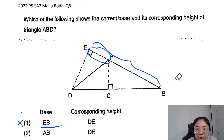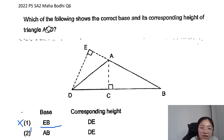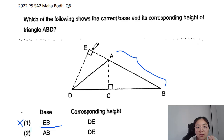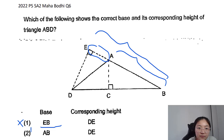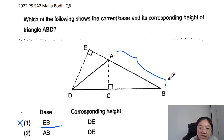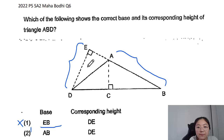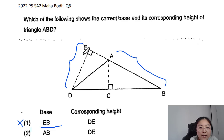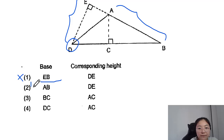Option two says AB is the base — yes, AB is part of the triangle, unlike EB which included the dotted extension EA. So with AB as the base, we look at DE as the corresponding height. Remember, when we have this type of triangle we extend the base, then connect the height from the opposite vertex to the base at 90 degrees. So option two is the answer.